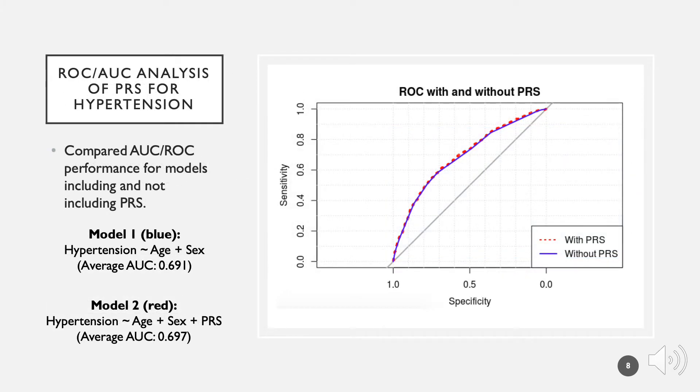We performed five-fold cross-validation and ROC analysis on two models, one including just age and sex, and the other including age, sex, and our PRS. Surprisingly, we found little difference in the average AUCs. The model including PRS performed only slightly better than the model with just age and sex. Our examination of this phenomenon elucidated a key statistical problem in current PRS analysis.